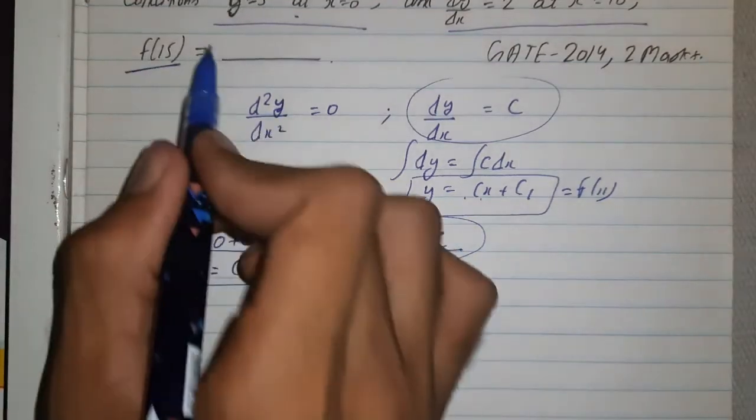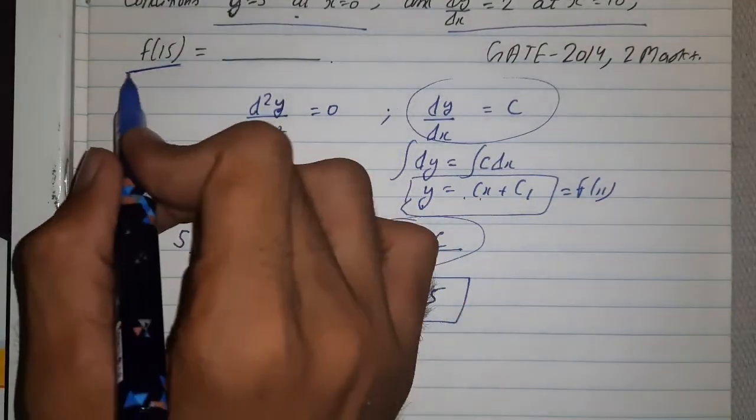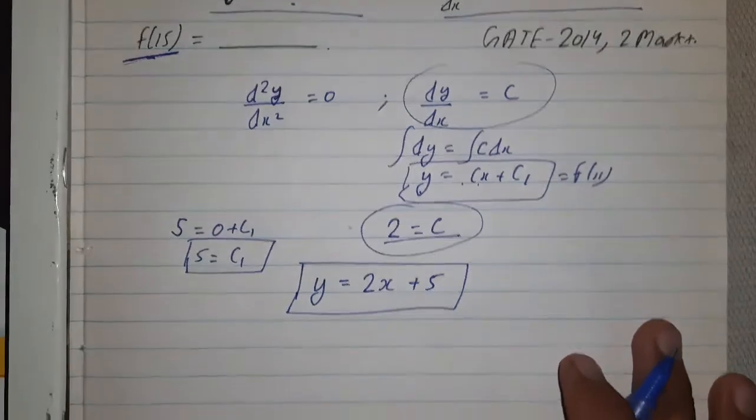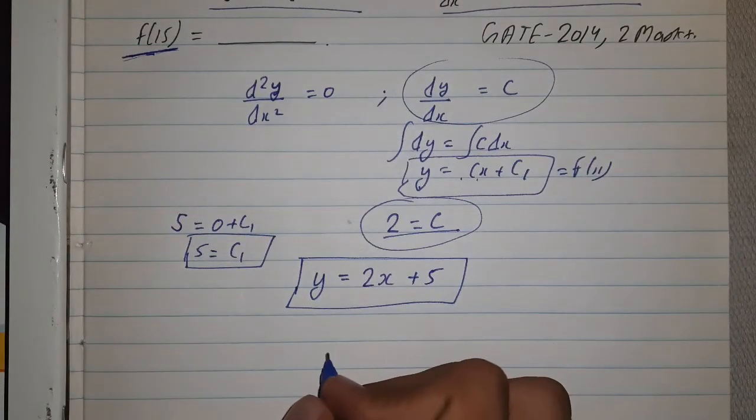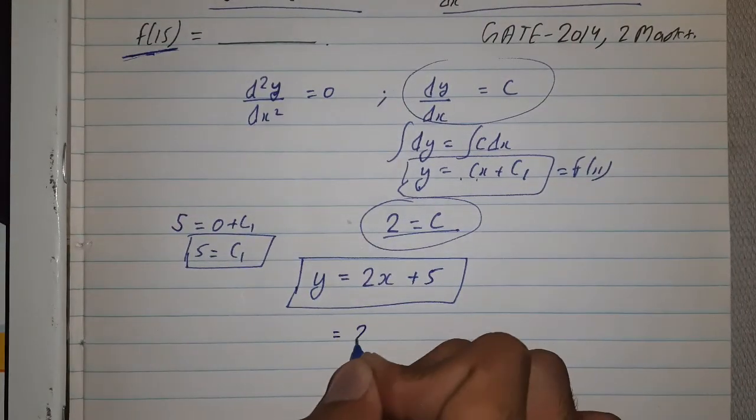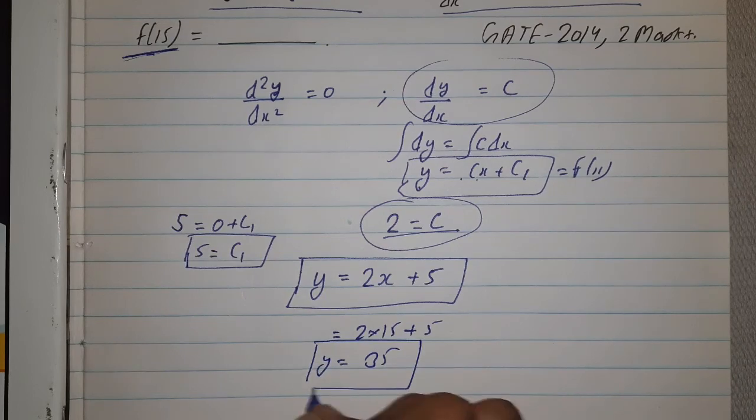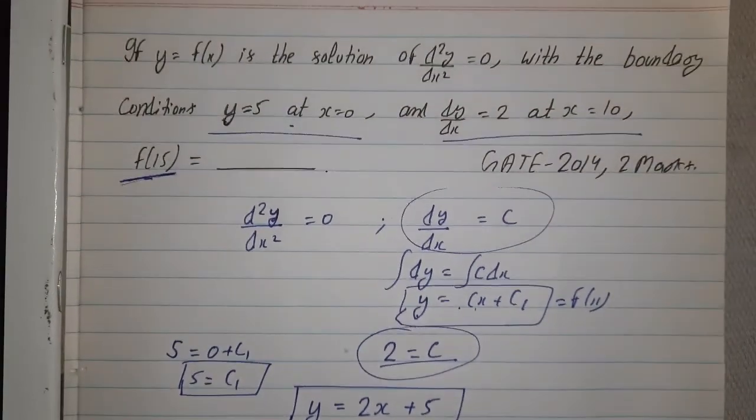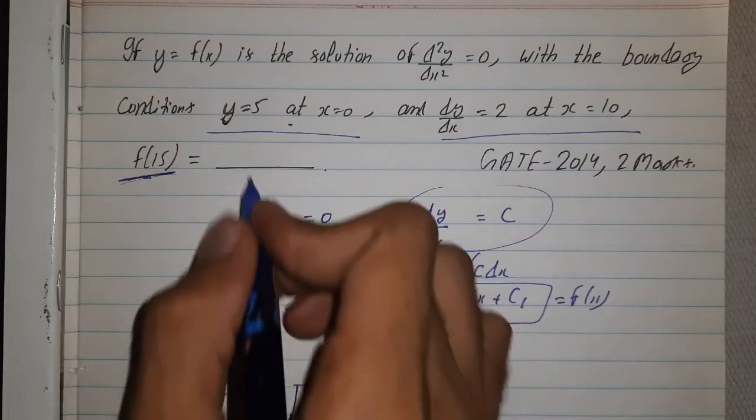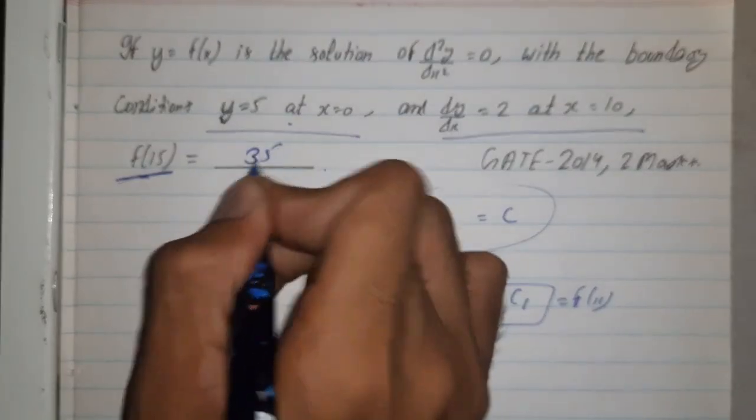It means x = 15, so we will substitute x = 15 and we are left with 2 into 15, this is 30 plus 5, this is 35. So y is equal to 35, and this question was in double integers, so our answer would be 35.